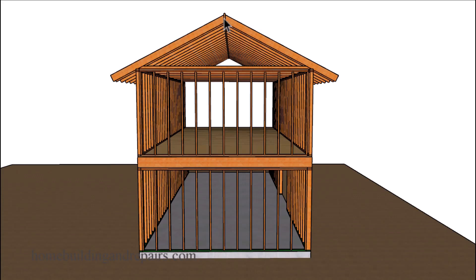Without the ridge beam, all of the weight of the roof rafters and ceiling joists will be transferring down through the walls and down to the building foundation. This will happen on both sides of the building if you have a situation like this.